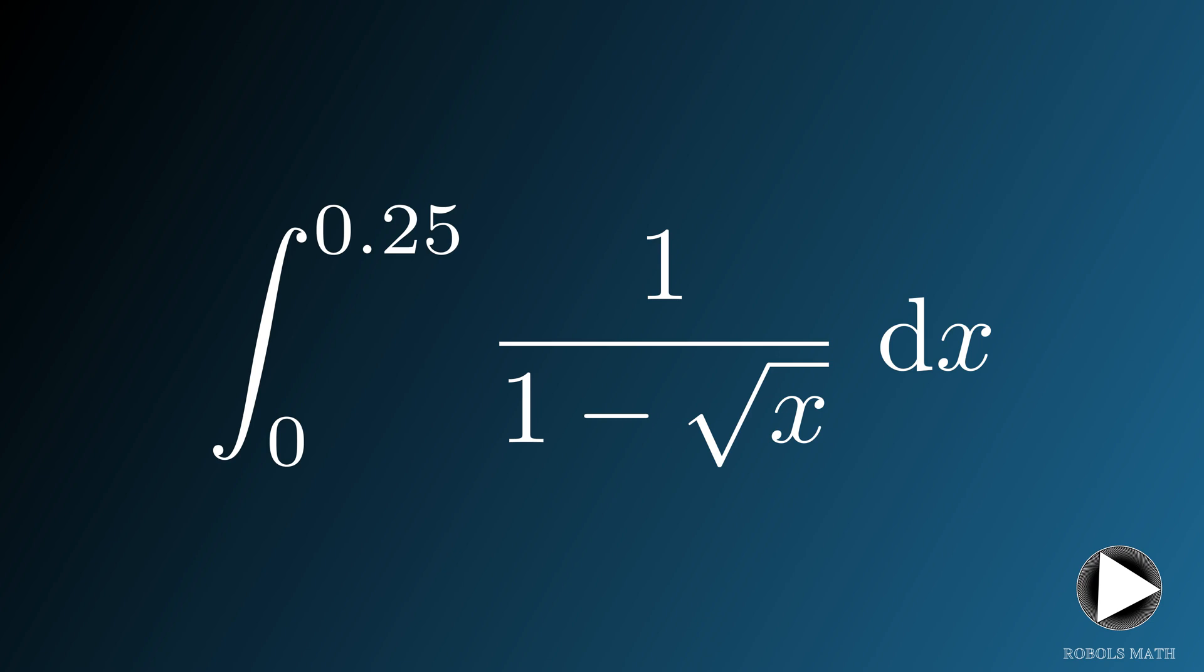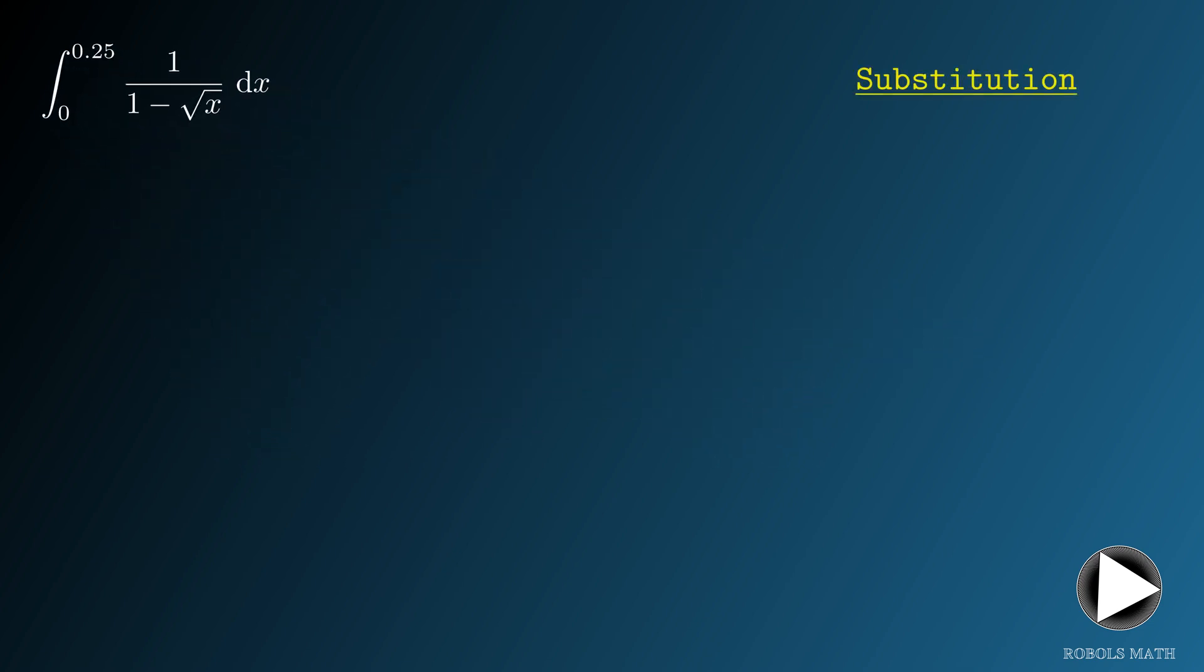To evaluate this integral, we can use the u substitution where we let u be the denominator. Note that when x equals 0, u is 1. When x equals 0.25, u is 1 half.